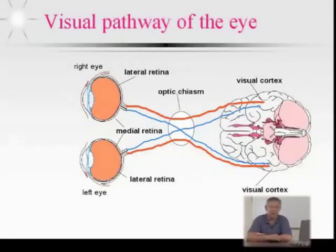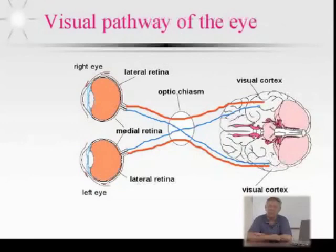The medial retinas, right and left, actually cross over each other. The right medial retina nerve endings actually go to the left side of the brain, and the left medial retina information goes to the right side of the brain. This crossover area is known as the optic chiasm.